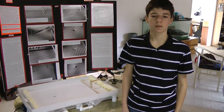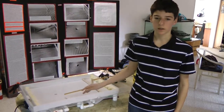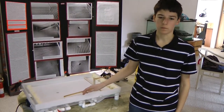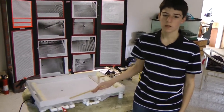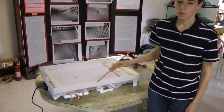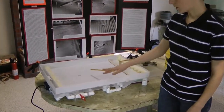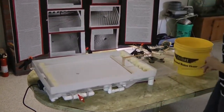To experiment with shallow water waves, we need to build a large, shallow aquarium. This one is built out of plexiglass. To make the waves easier to see, we painted the bottom white.